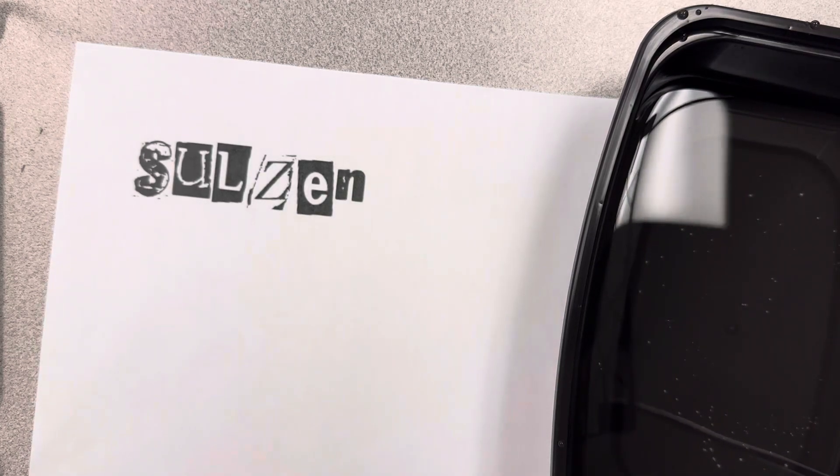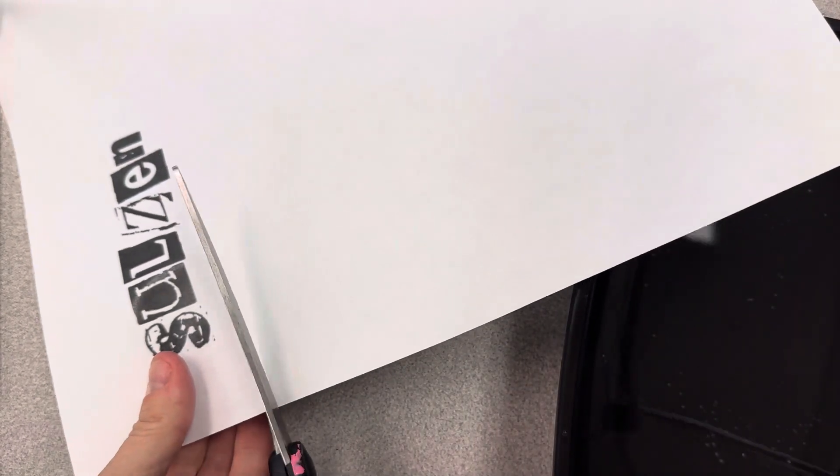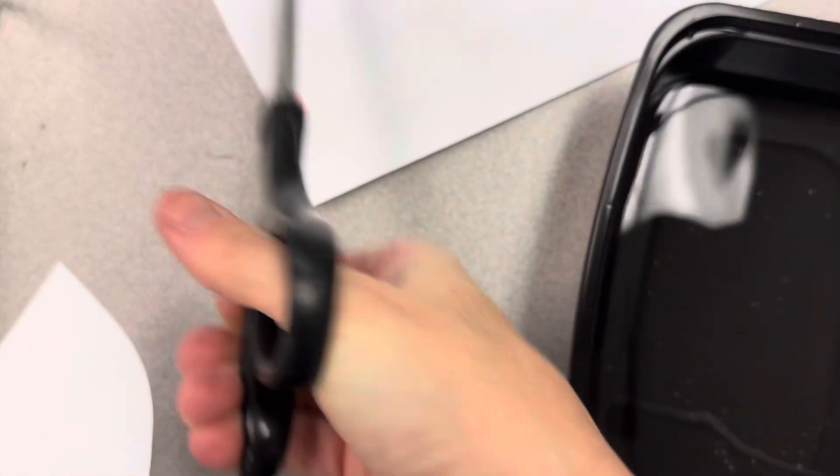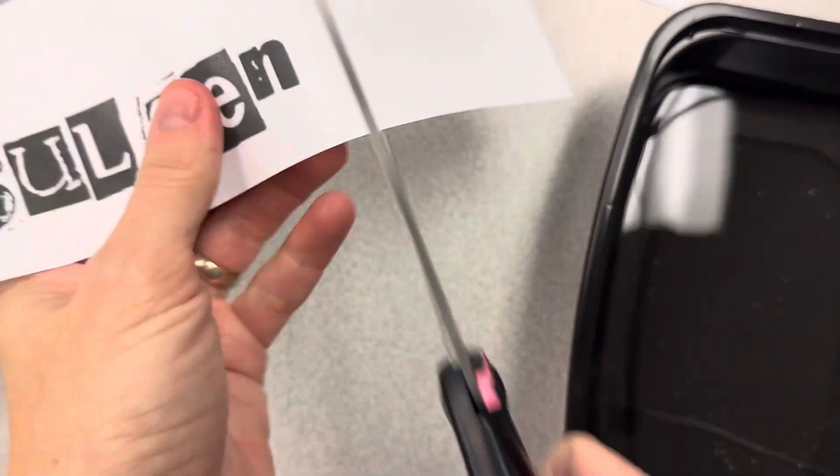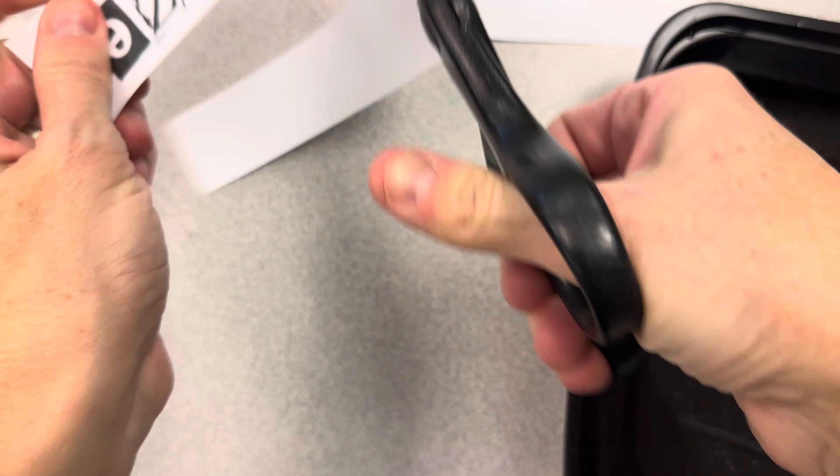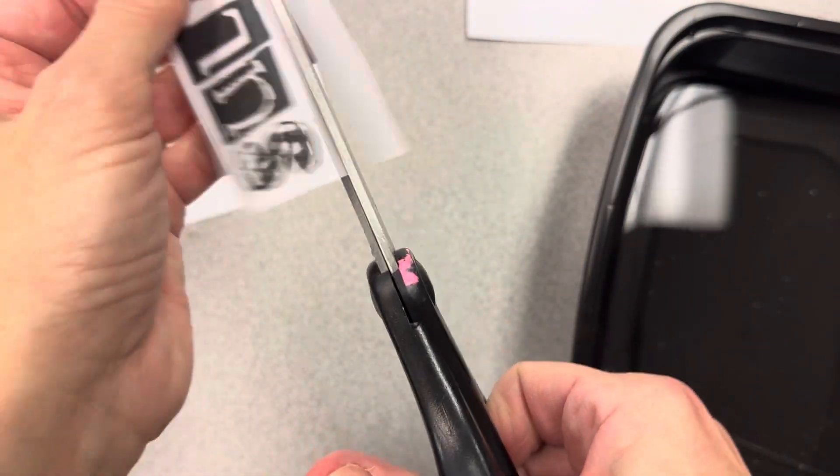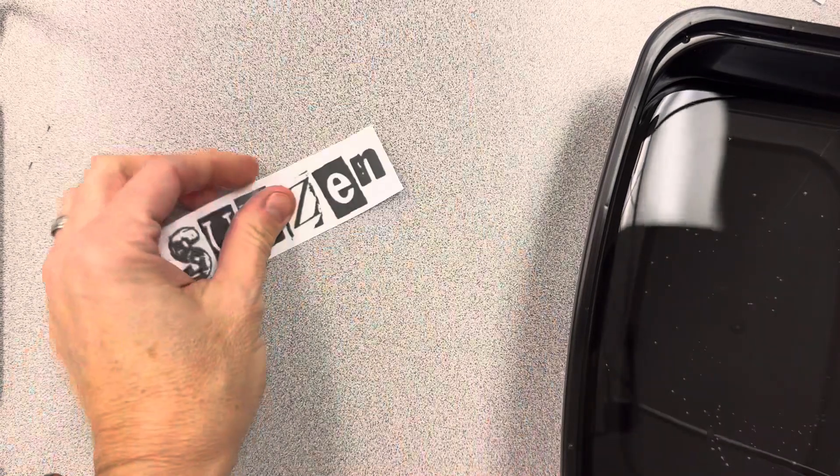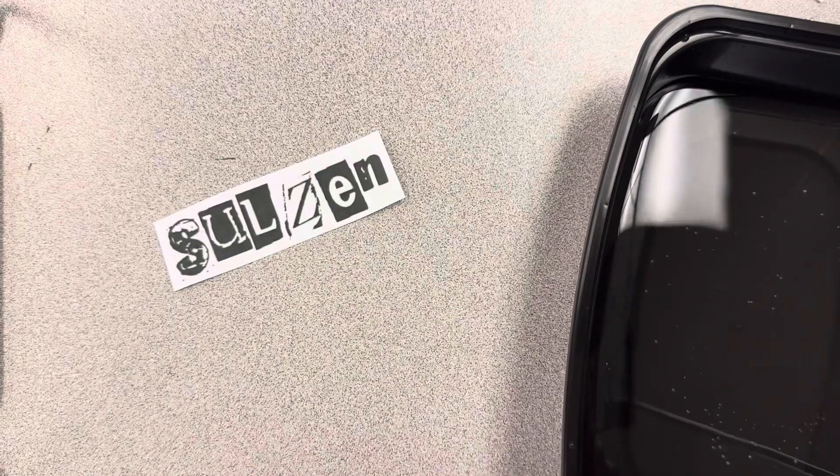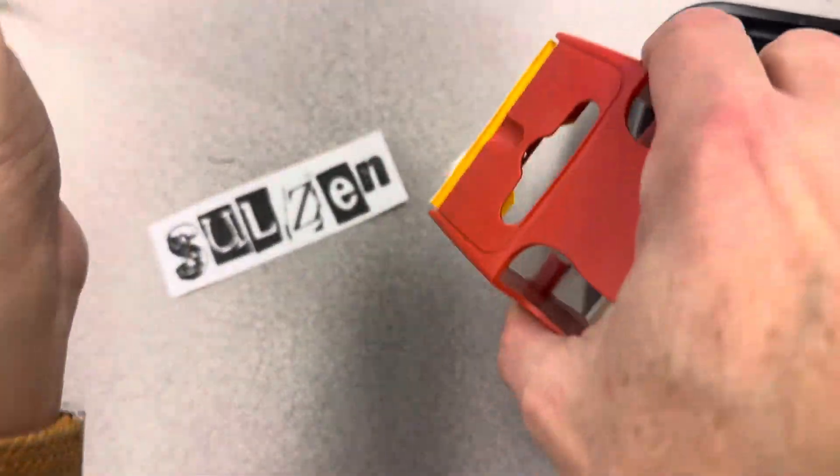Okay, to make a tape transfer you print something out from the photocopier, then you want to cut off most of the white space. Then you need packaging tape, one piece.